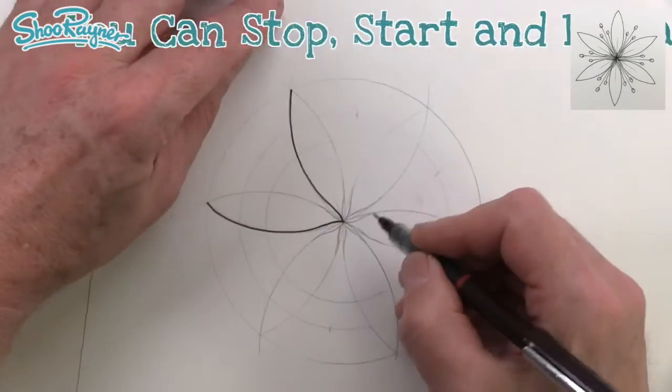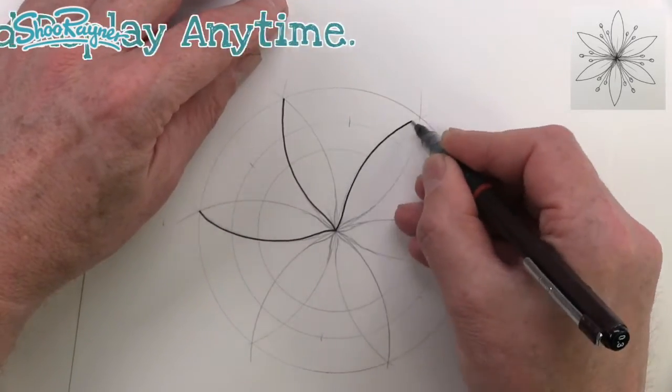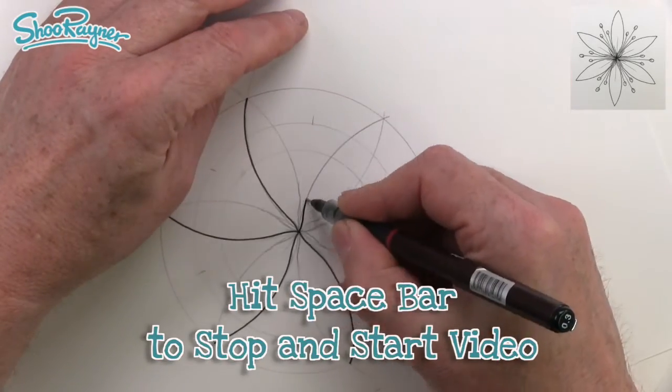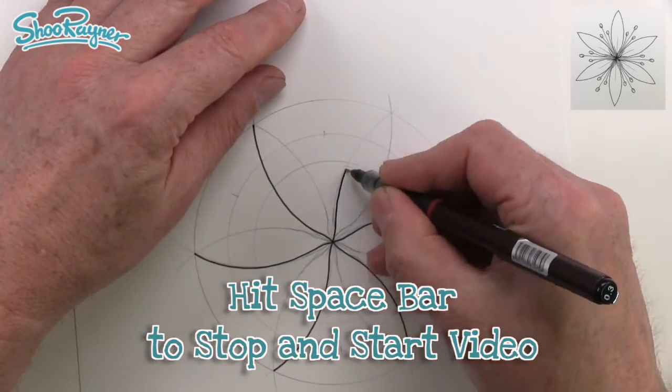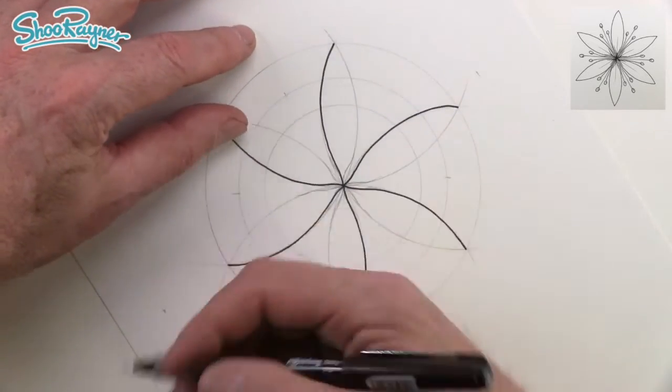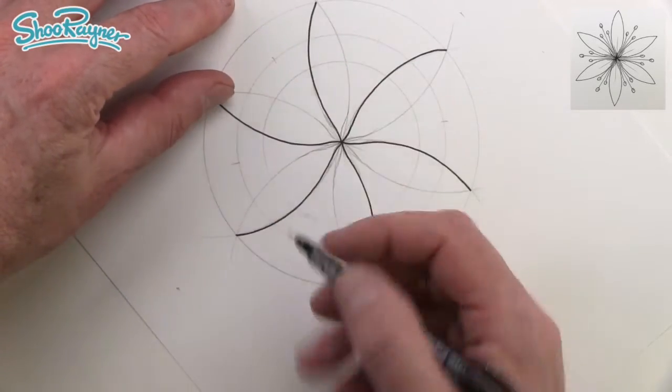If you find any of this confusing or difficult to follow, don't forget you can stop and start and replay at any time. Press the space bar or tap the screen to stop. And then we want to go back the other way but do it on this side so that we can still use this sort of pivot of the wrist.